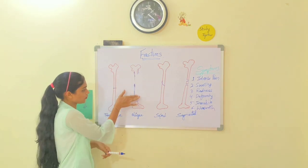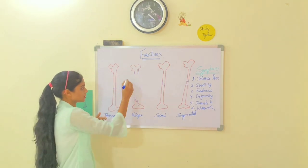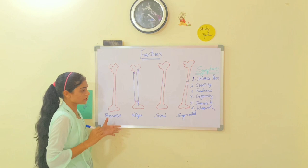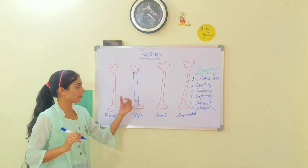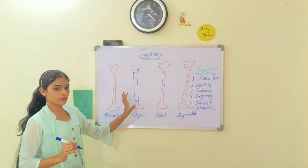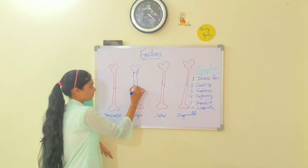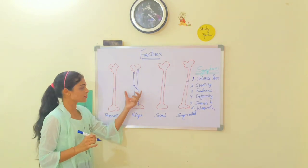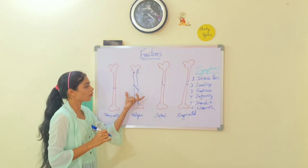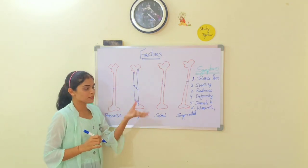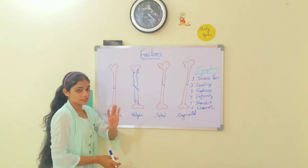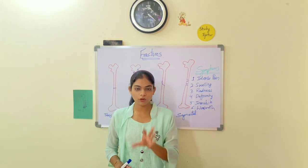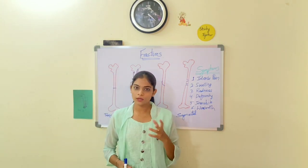First, let's see what fractures are. If I take this as a normal bone, which doesn't have any cracks and is placed in normal alignment, that is a normal bone. If there is a crack in it, then that is a fracture — a broken bone. Simply, a broken bone is a fracture. Fractures may occur at your joints as well as in a single bone in normal alignment.